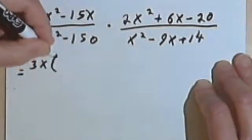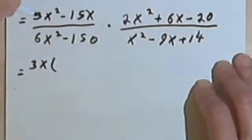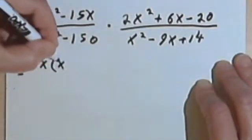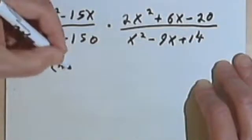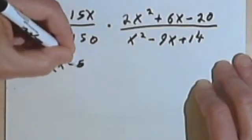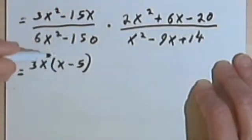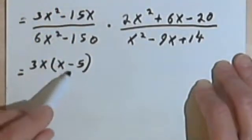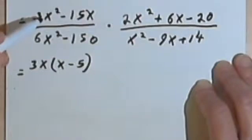So this polynomial is going to become 3x times... Let's see... 3x divided into 3x² would just be an x. And 3x divided into -15 would be a -5. And of course you can always check these real quickly by just distributing this back and making sure you're where you started.